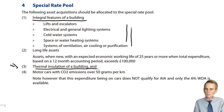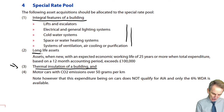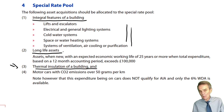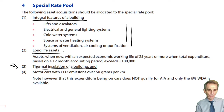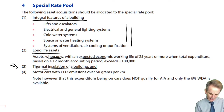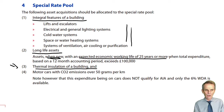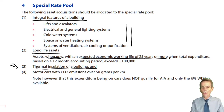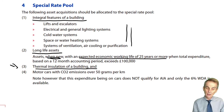One worth watching out for is long life assets — plant and machinery, but long life plant and machinery. How do we define that? It's assets that, when new, would have had an expected economic working life of 25 years or more. So typically a question would say they bought an item of plant with an anticipated working life when new of 30 years. 30 is more than 25, and on that basis it is a long life asset.